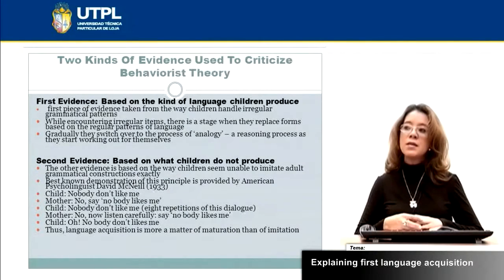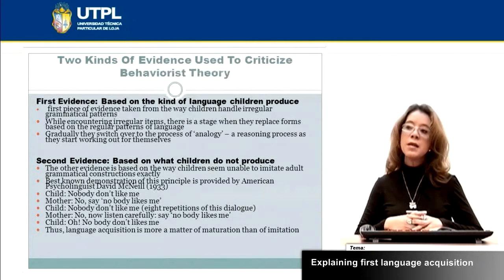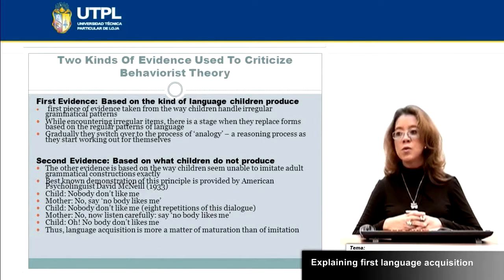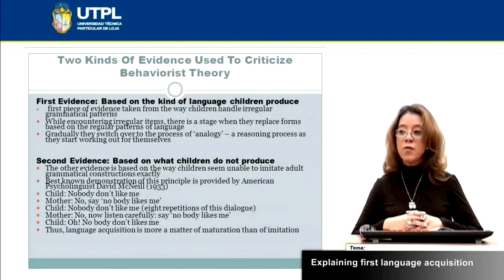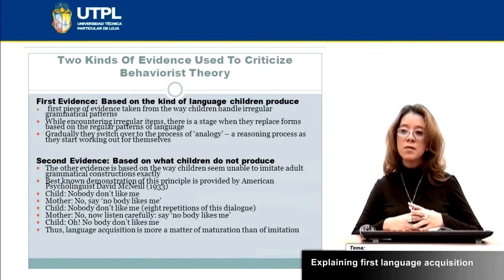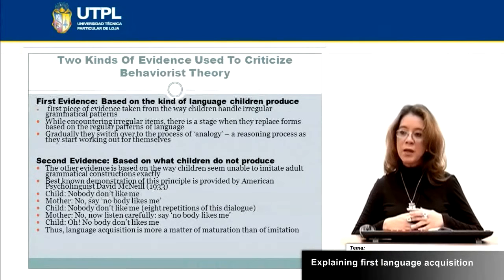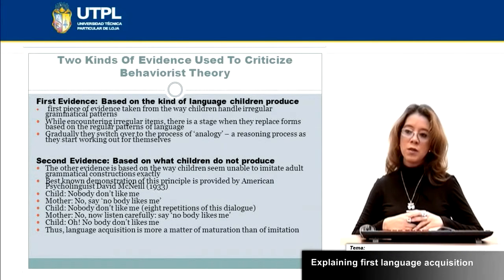What are the evidence used to criticize this theory? We have two pieces of evidence. The first is based on the kind of language children produce — specifically the way children handle irregular grammatical patterns. Gradually they switch over to a process of analogy, a reasoning process they work out for themselves, and while encountering irregular items, there is a stage when they replace forms based on the regular patterns of language.